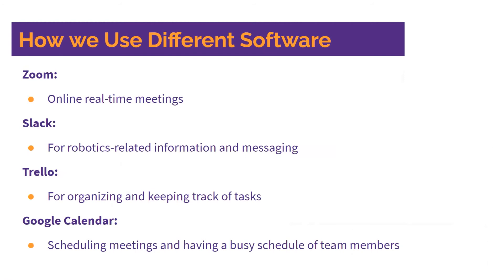Here's how we use Zoom, Slack, Trello, and Google Calendar together: Zoom is for our weekly team meetings. Slack is for robotics-related messaging and informing teammates. Trello is used in conjunction with Slack and screen-shared onto Zoom so we can go through the different boards and see what needs to be done for each sub-team. Google Calendar is used to schedule meetings, demos, and track when teammates are busy.